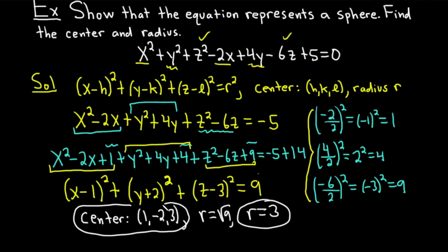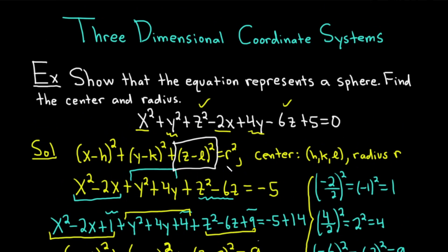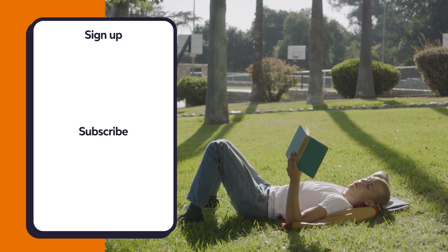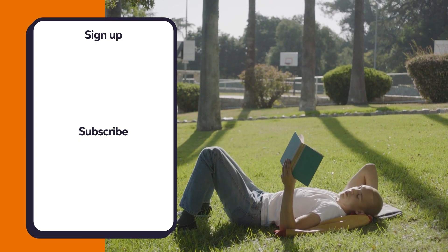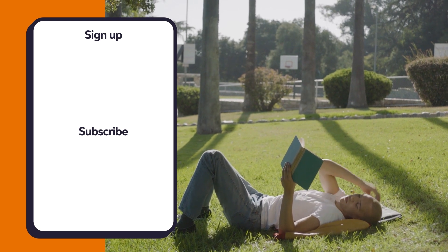So we have a sphere in three-dimensional space with center (1, negative 2, 3) and radius 3. The formula is elegant — just like the circle's equation with one extra component. Spheres are very common in the real world; think of a basketball. Hopefully this video has taught you some mathematics, especially completing the square. Thanks for watching, and check out more videos on Chegg. Until next time, good luck!